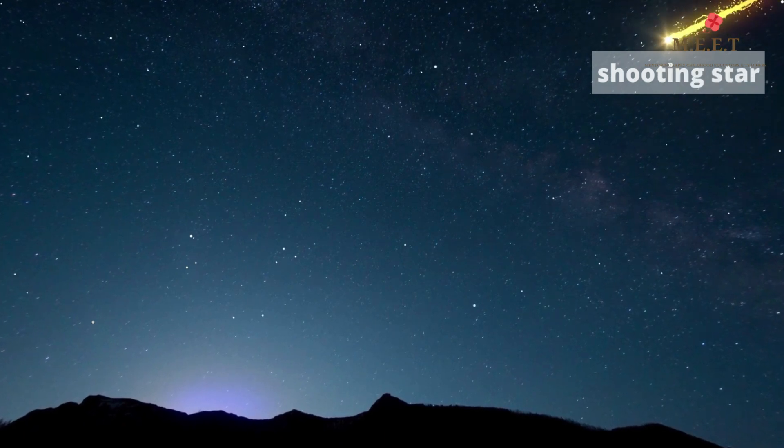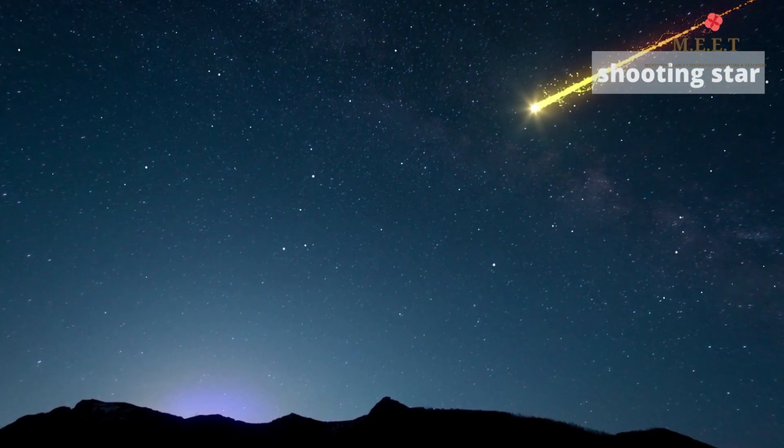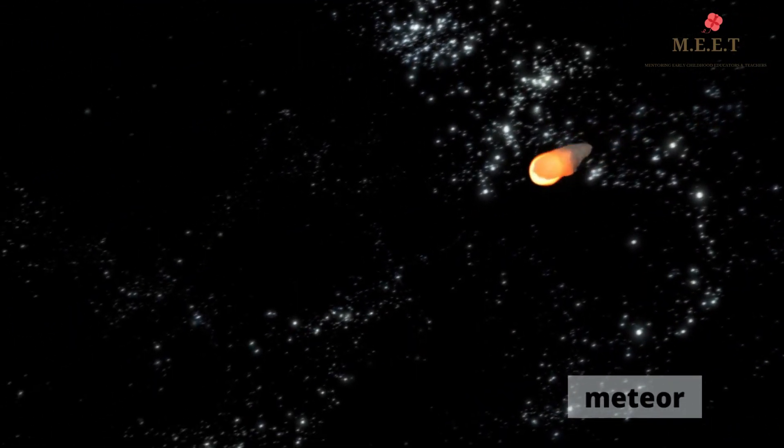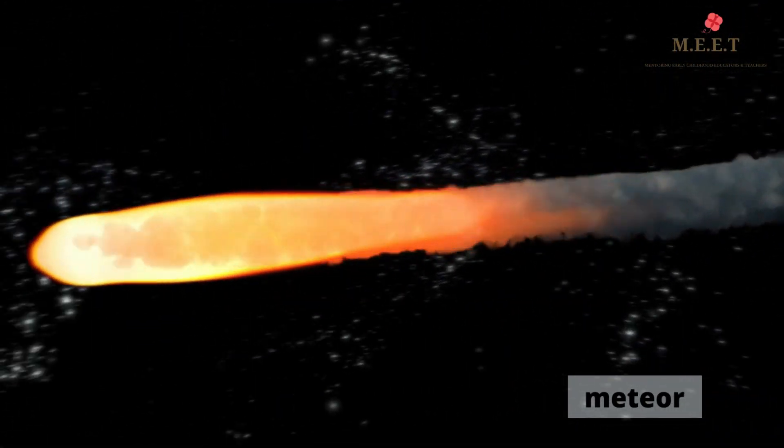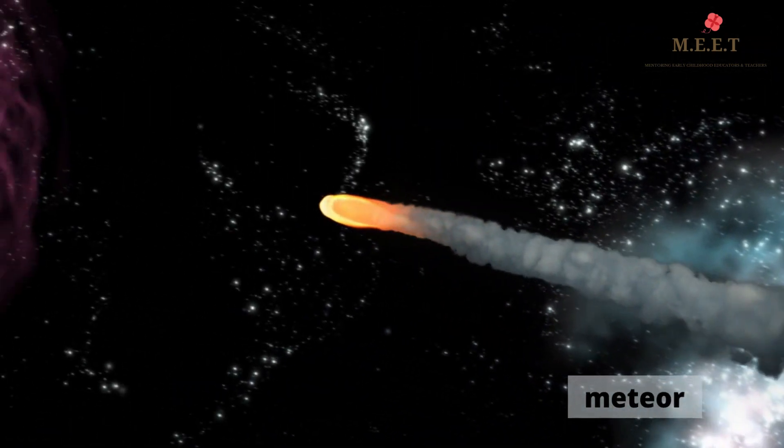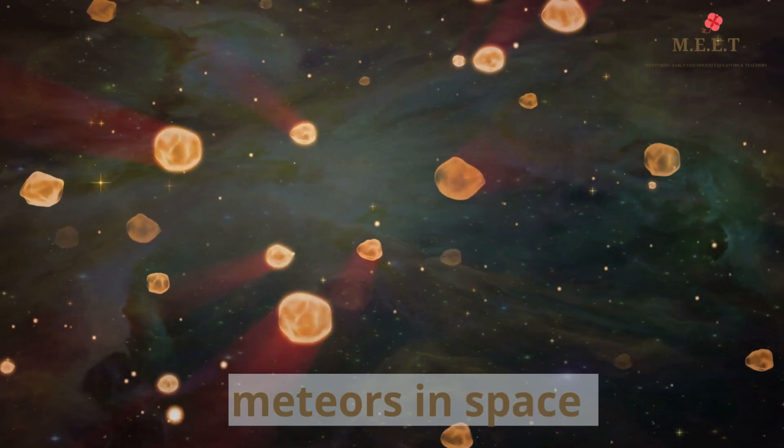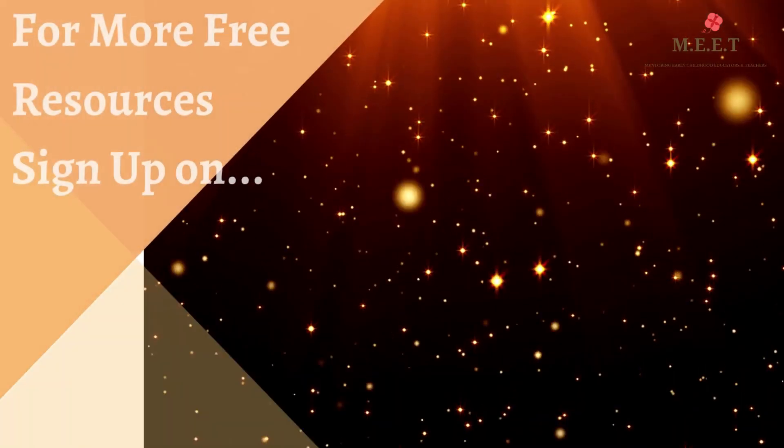Look! A shooting star! But this is not actually a star but a meteor. A meteor is a small fragment of an asteroid or comet that burns in the earth's atmosphere. Real stars cannot fall down.